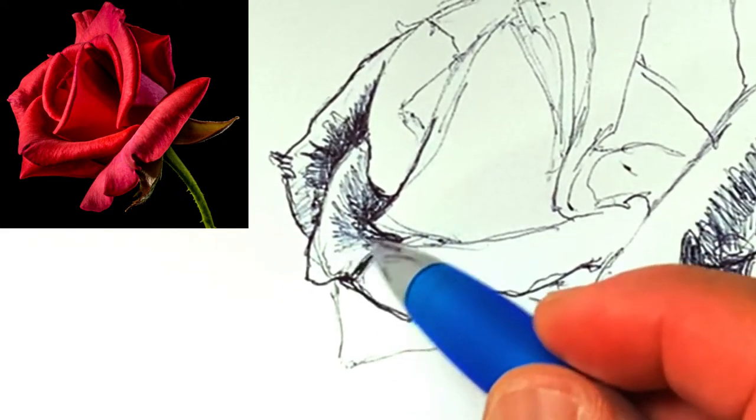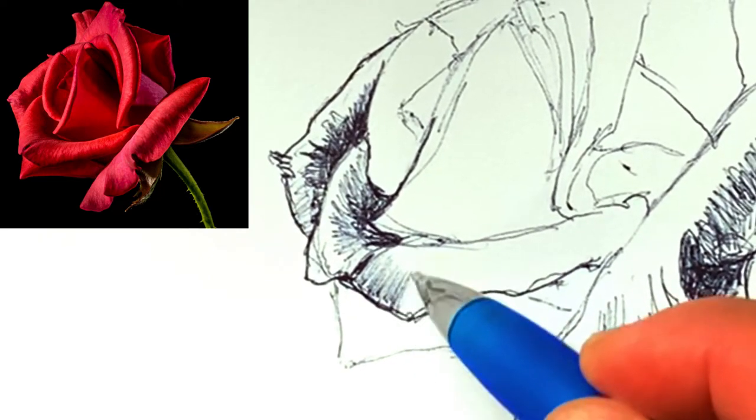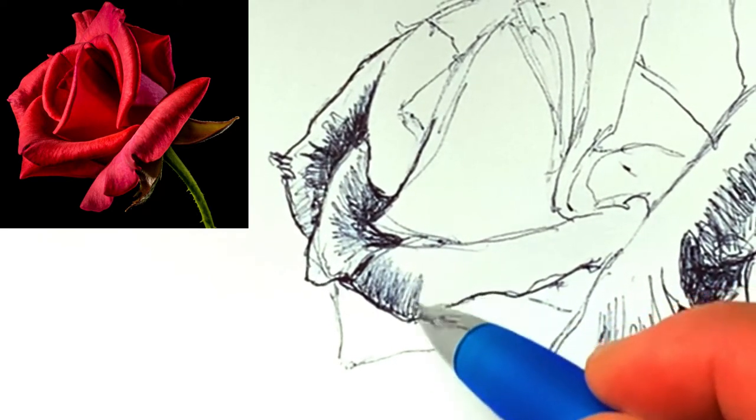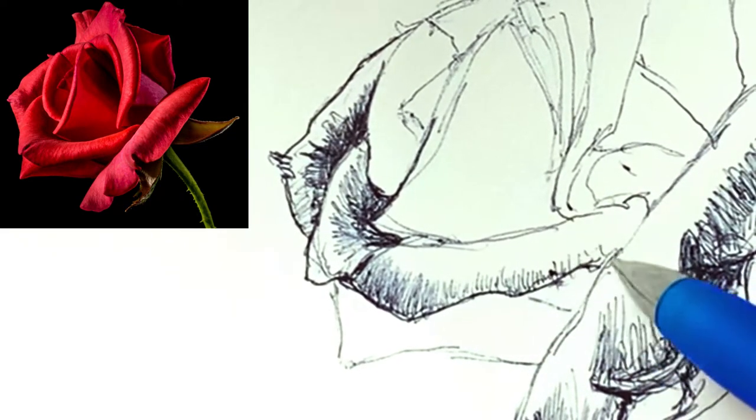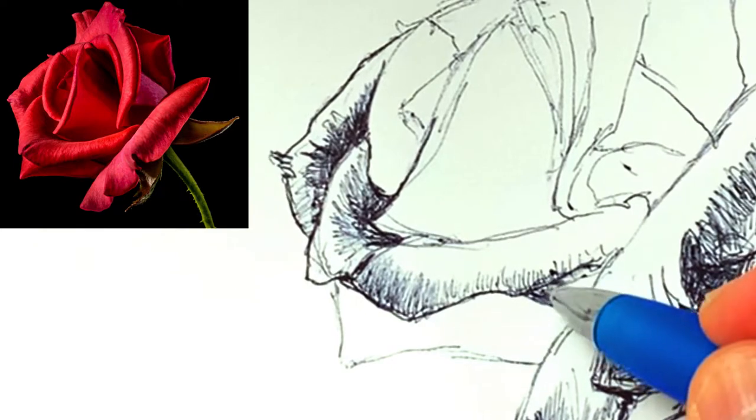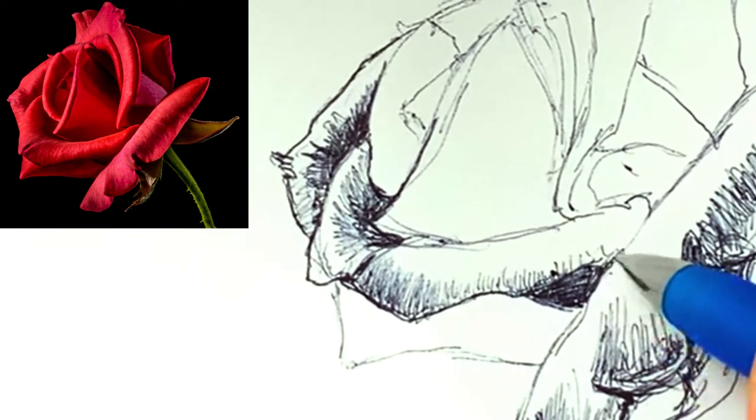You notice that as I shaded that center petal, I kept the pen strokes radiating out all the same angle. But in other areas it's just easier to start shading following the edge of the petal.